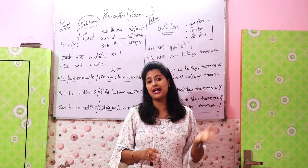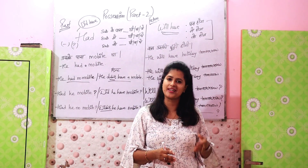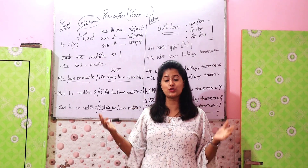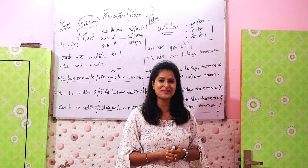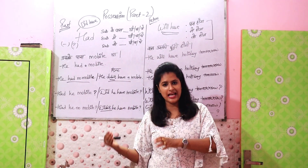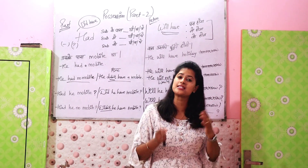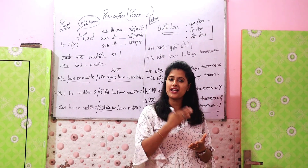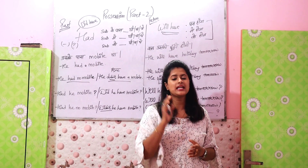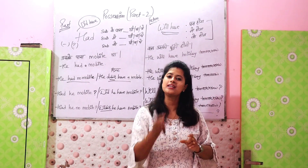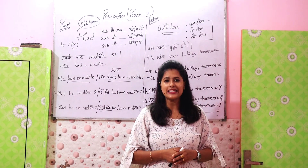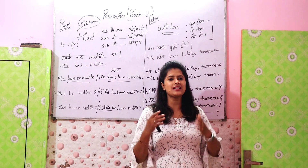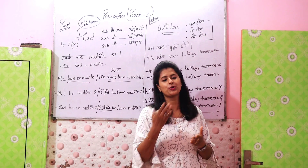Next, say five things that India has. Since India is singular, we use 'has.' For example: 'India has the latest technology,' 'India has a huge population,' 'India has talented people.' Then say five things India doesn't have — India doesn't have discipline, India doesn't have the latest technology in some areas. Aapko jo bhi lagta hai ki India ke paas abhi nahi hai, you can say that using 'India doesn't have' or 'India has no.'